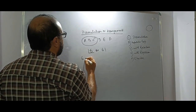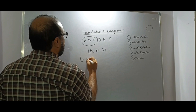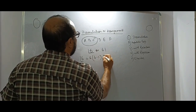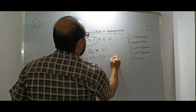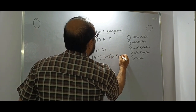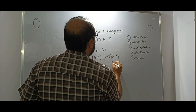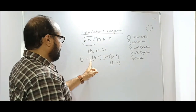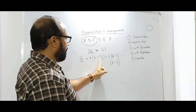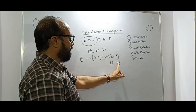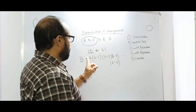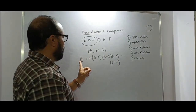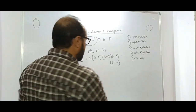Six factorial is equal to 6 × (6−1) × (6−2) × (6−3) ... down to (6−6). So the terms come out as 6 × 5 × 4 × 3 × 2 × 1. If you multiply all these together you get factorial 6.